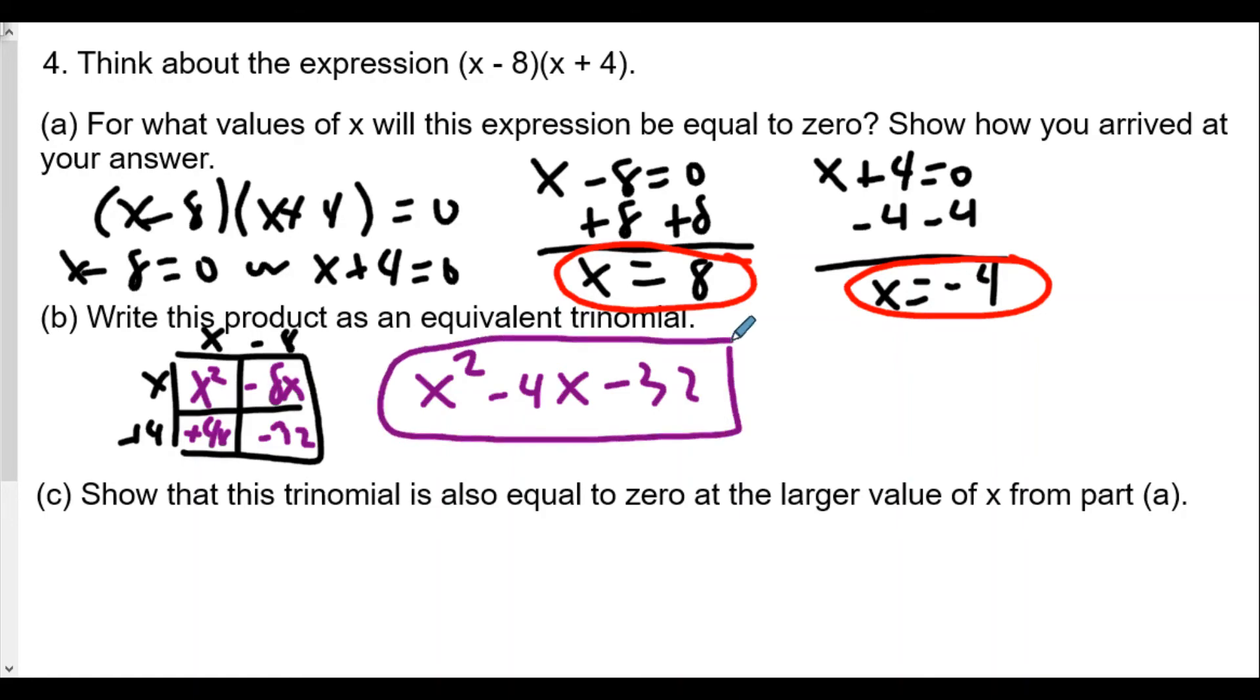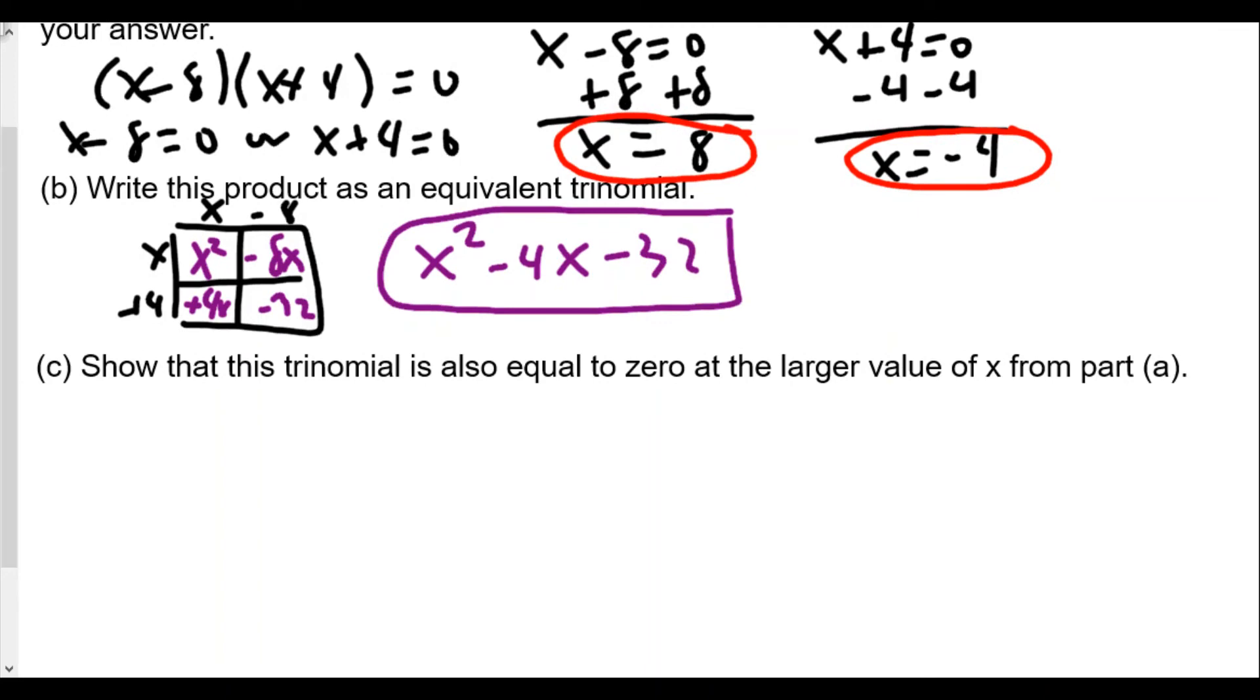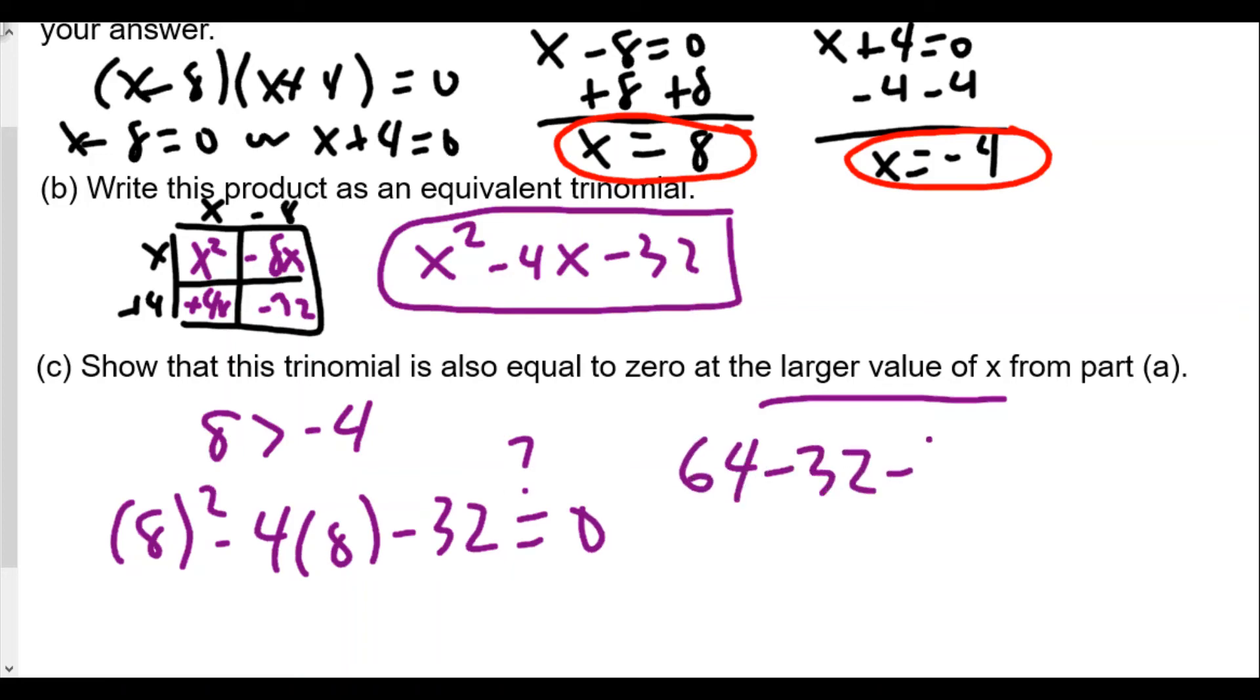and now for the last part of this question, show that trinomial is also equal to zero at the larger value of x from part a, now the larger value of x, well, I know 8 is larger than negative 4, so we can plug in either one, it would not matter, so we would plug in 8 squared minus 4 times 8 minus 32, will that equal to zero? Well, 8 squared is 64, minus 32, minus 32, well, 64 minus 32 is 32, and then 32 minus 32 equals 0, so 0 equals 0, voila, it is true,